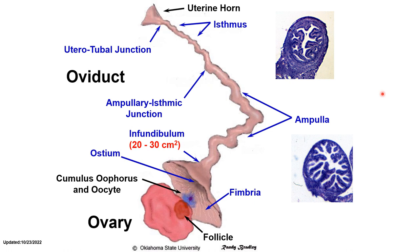After the ampullary-isthmic junction, we have the isthmus. In terms of its mucosa, the isthmus is also convoluted. However, the muscularis is considered to be well-developed, which gives the isthmus a hard feel when touched on the external side — it is hard because it has a well-developed muscle layer.